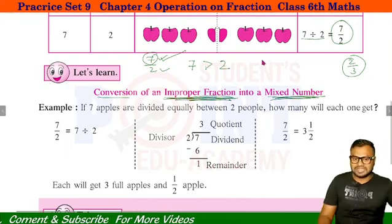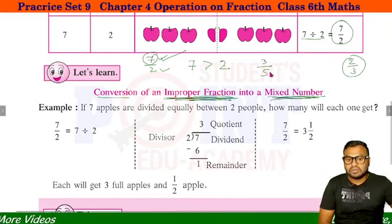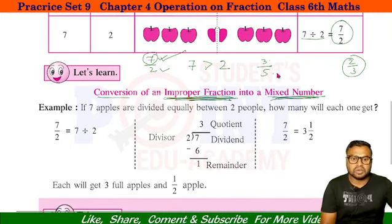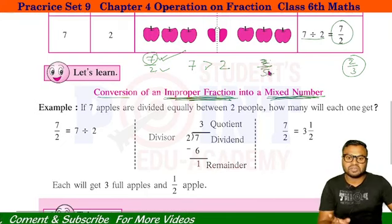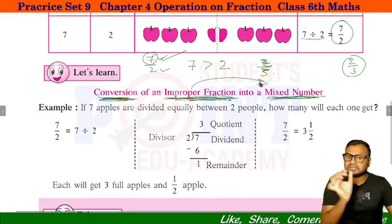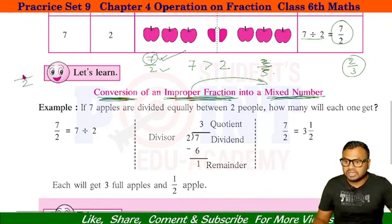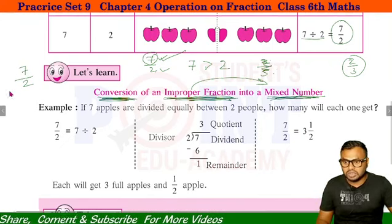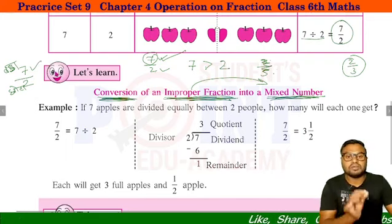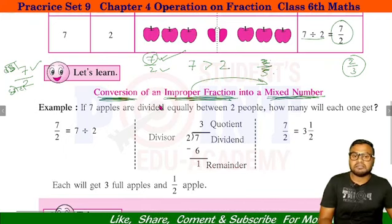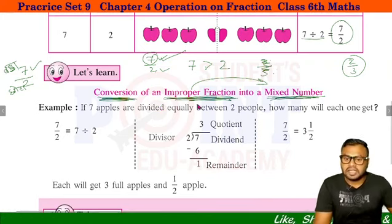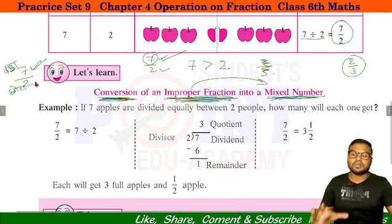जैसे Proper Fraction की बात करें — 3 upon 5 — यह Improper नहीं है, यह Proper Fraction है। क्योंकि Denominator बड़ा है, Numerator छोटा है। Proper Fraction को Mixed Fraction में convert नहीं किया जा सकता। Mixed Fraction में सिर्फ Improper Fraction को ही convert किया जा सकता है। Always remember: in the Improper Fraction, the numerator is always greater than the denominator.